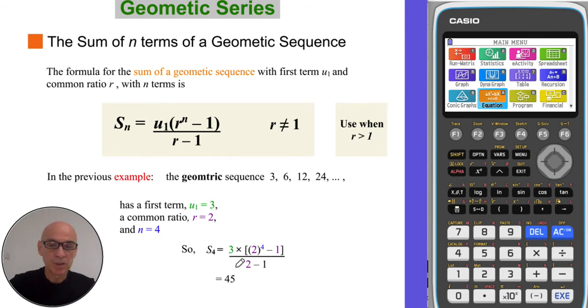So if we substitute into the equation, 3 for u1, 2 for r, and 4 for n, and perform the calculation, we get 45. The same answer we had before.